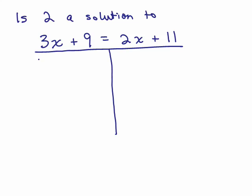So on the left-hand side, I'm going to replace the x with a 2. So 3x means 3 times 2 plus 9, and then I'm going to use the order of operations. So that's just 6 plus 9, which is 15.